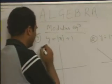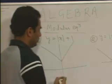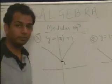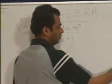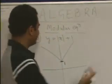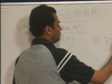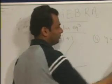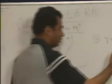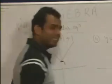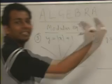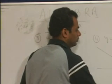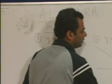Shifting the graph by 1 unit in the upward direction, I will get a graph like this one — it will start from 0,1. The next function is y = |x - 1|. In this case we will get the same graph but it will be shifted in the right-hand side direction. We will start from this particular point where x = 1.